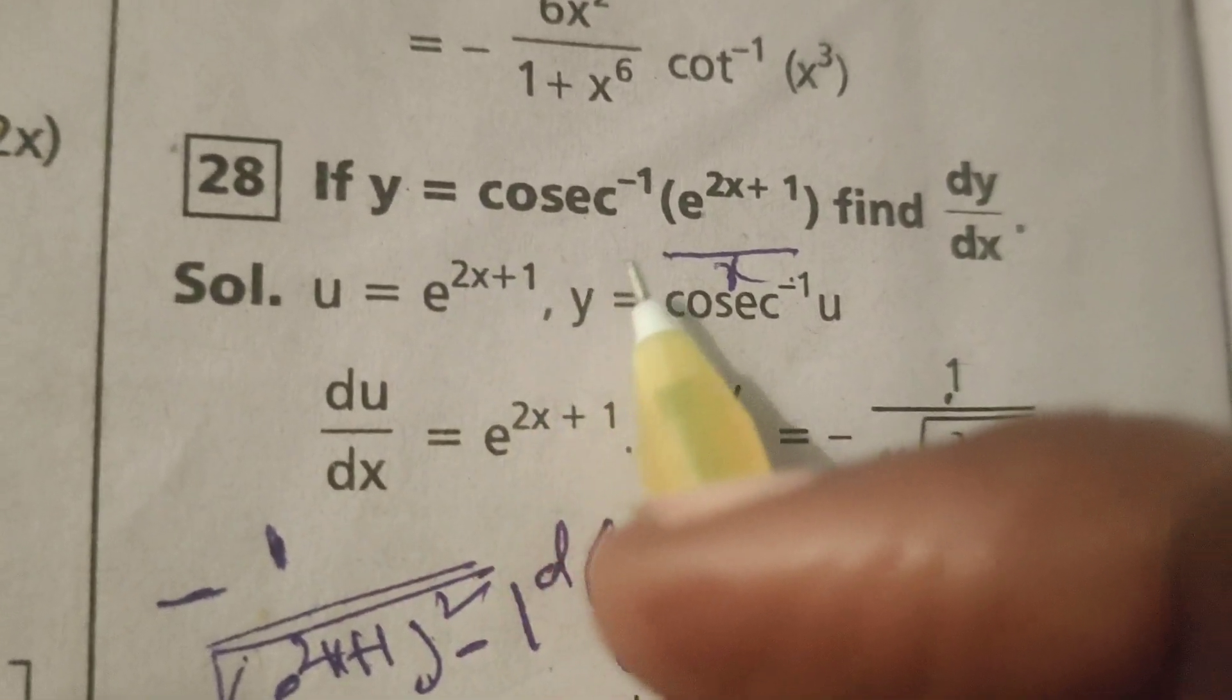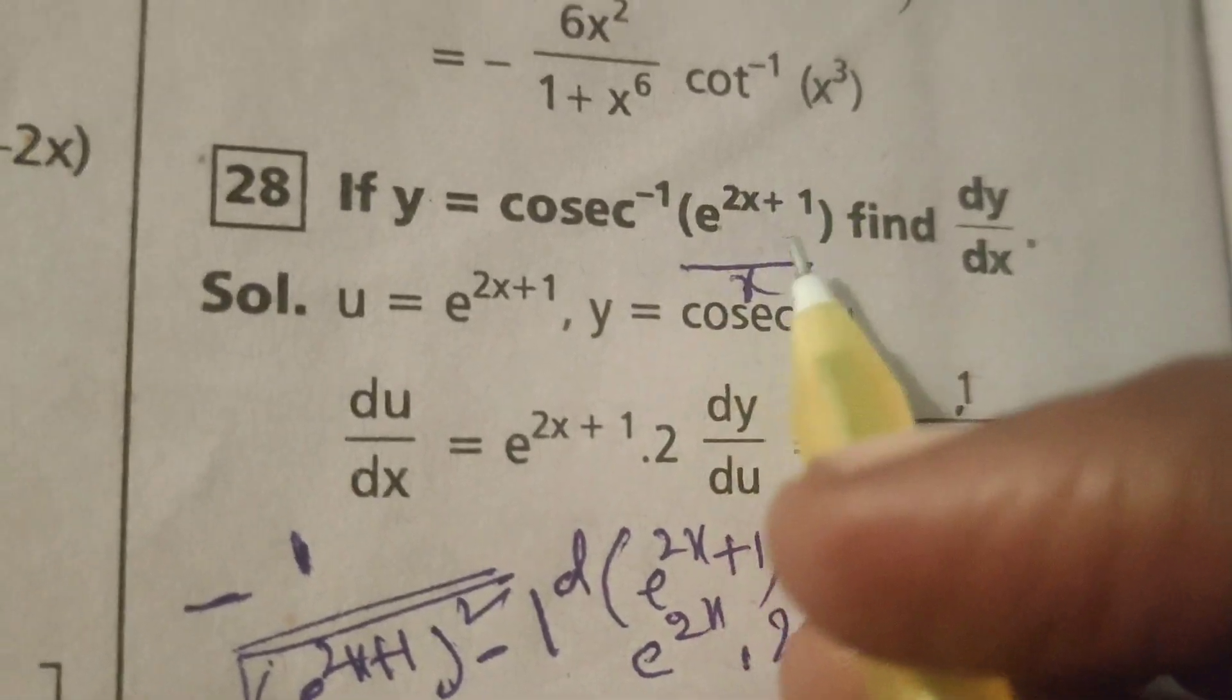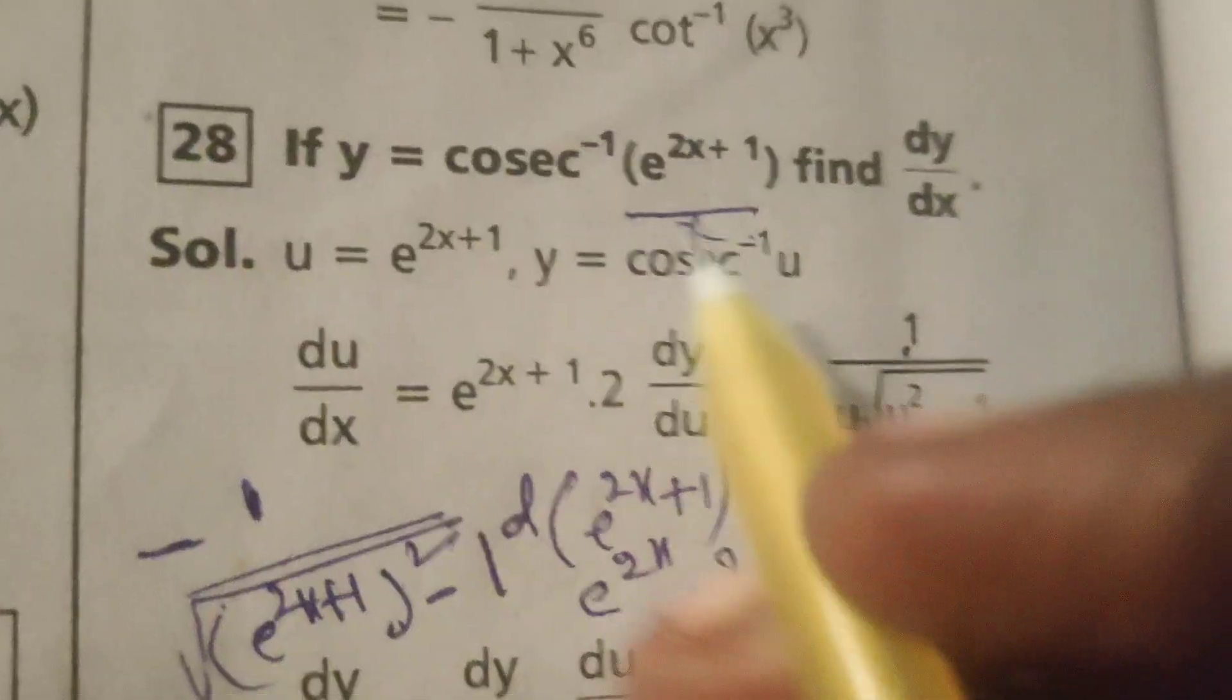If y equals cosecant inverse of e power 2x plus 1, find dy by dx.